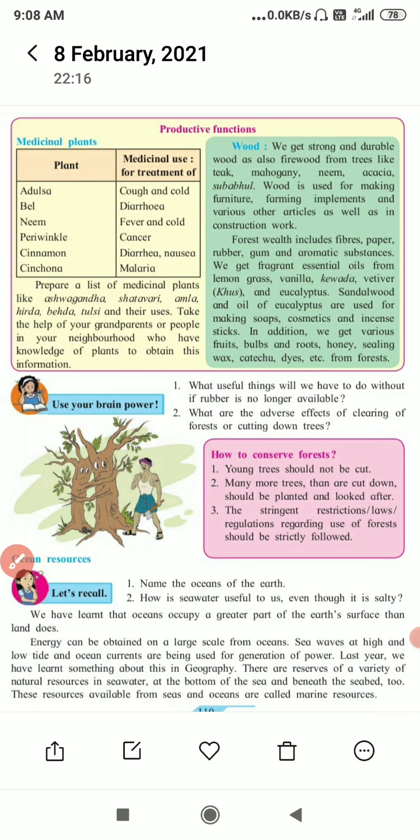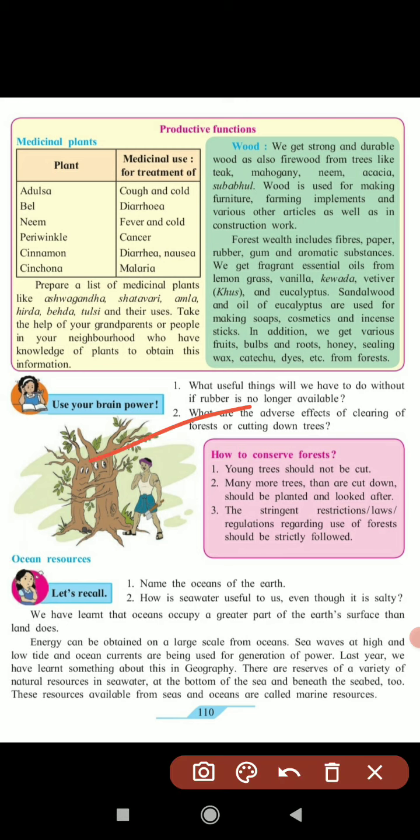From forests, we get medicinal plants like adusa, neem, and periwinkle for treating colds, diarrhea, fever, and cancer. We also get wood which is durable, including firewood and furniture wood like neem and babul.